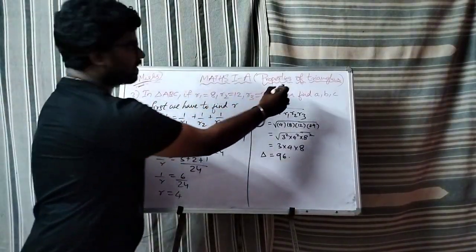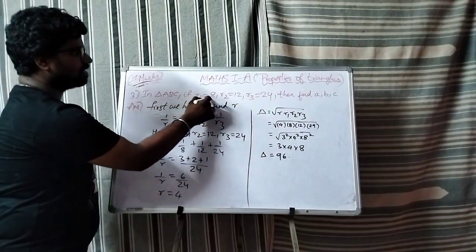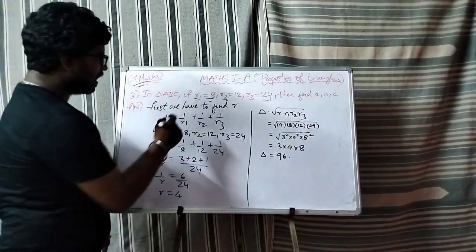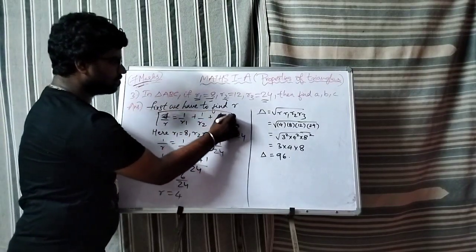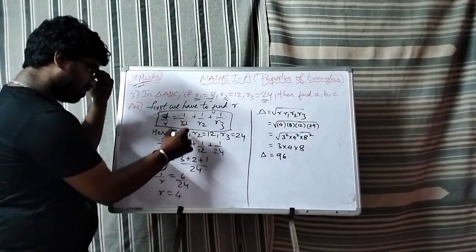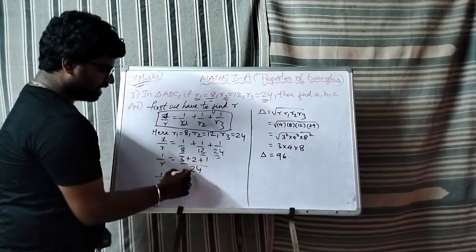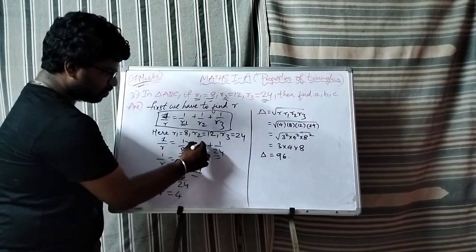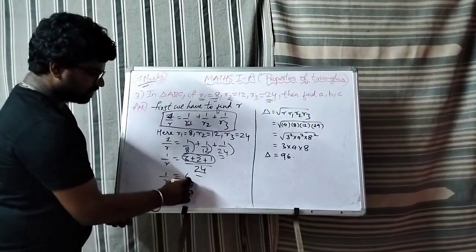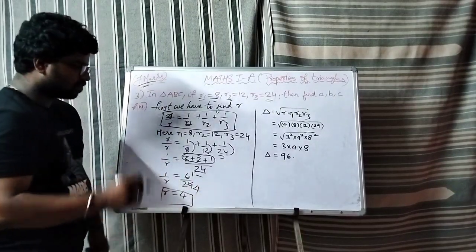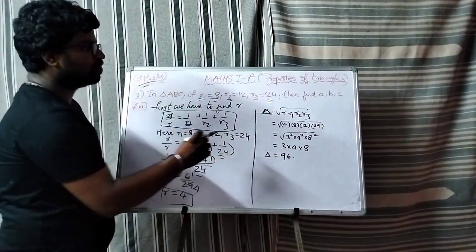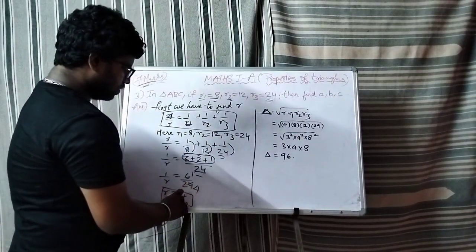Third is properties of triangles. In triangle ABC, if r1 is equal to 8, r2 is equal to 12, and r3 is equal to 24, then find ABC. One by r is equal to one by r1 plus one by r2 plus one by r3. So r is equal to 4. Now delta is equal to root of r into r1 into r2 into r3.